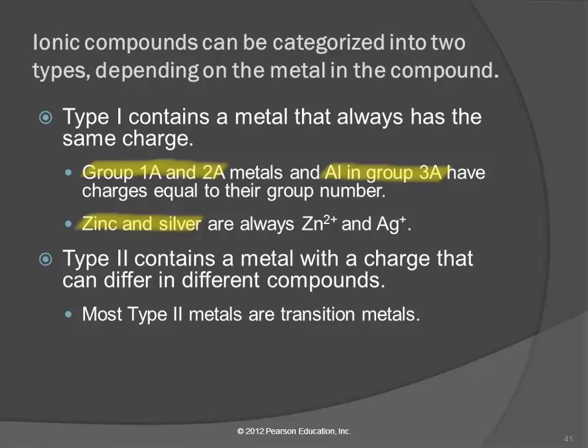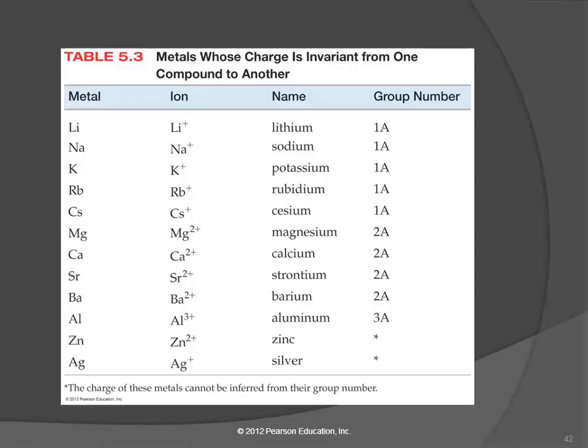The type 2 compounds have metals that form more than one charge, and most of those are transition metals, but not all. Here's a table of the ones where the charge is invariant. They always form the same charge, and it's predictable from the periodic table. That might be helpful to refer to.